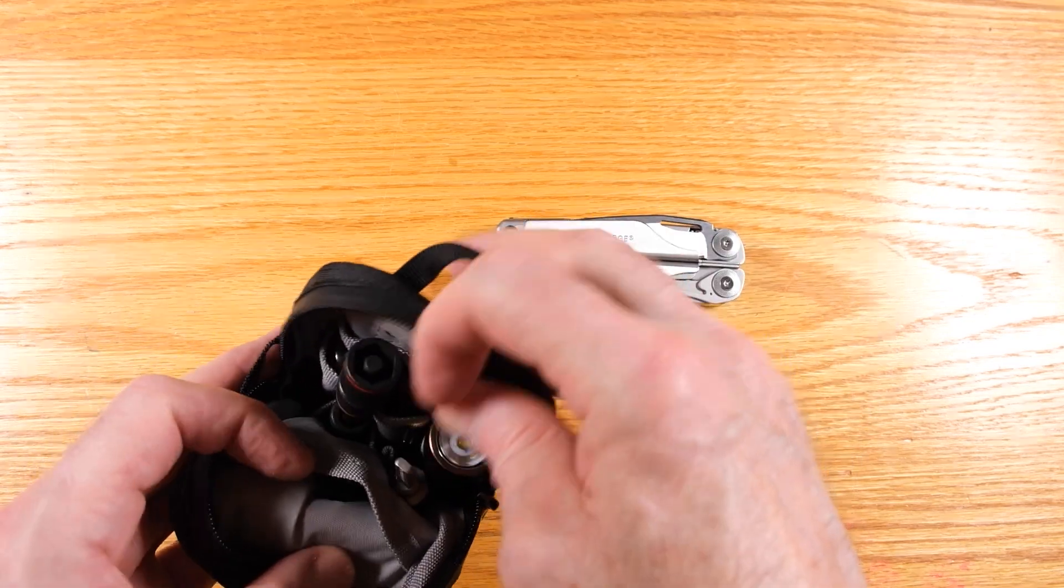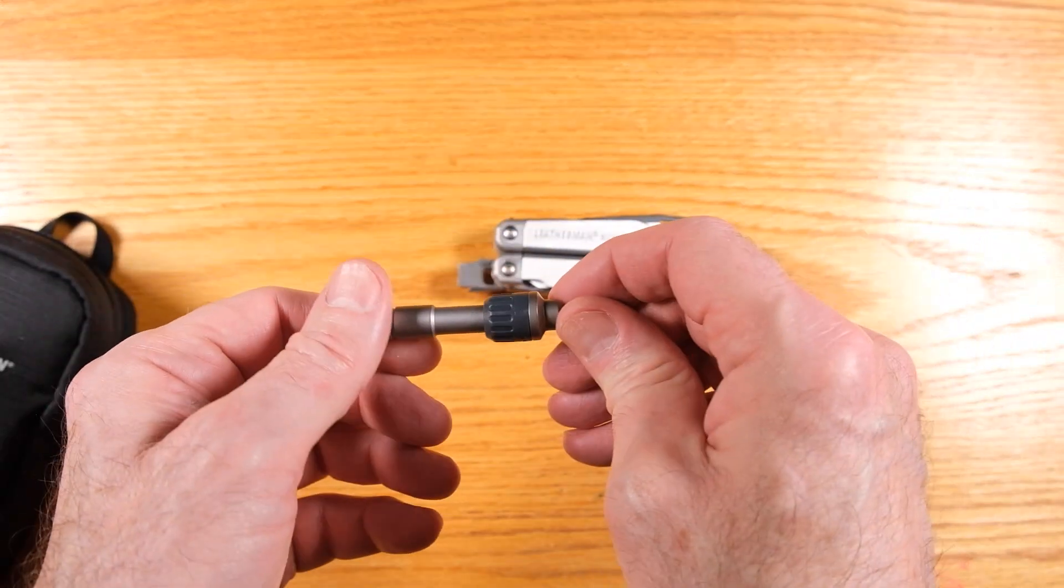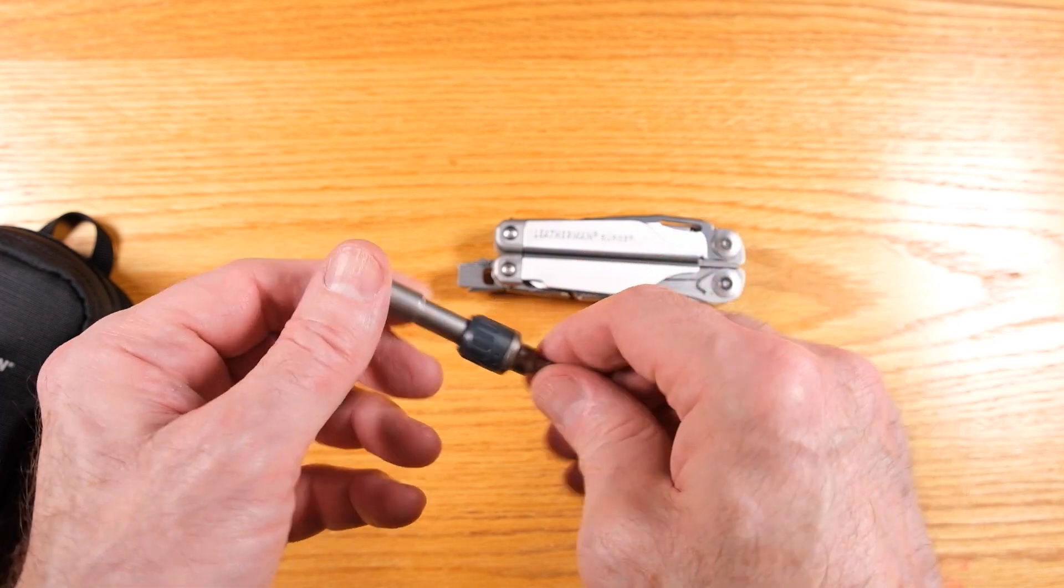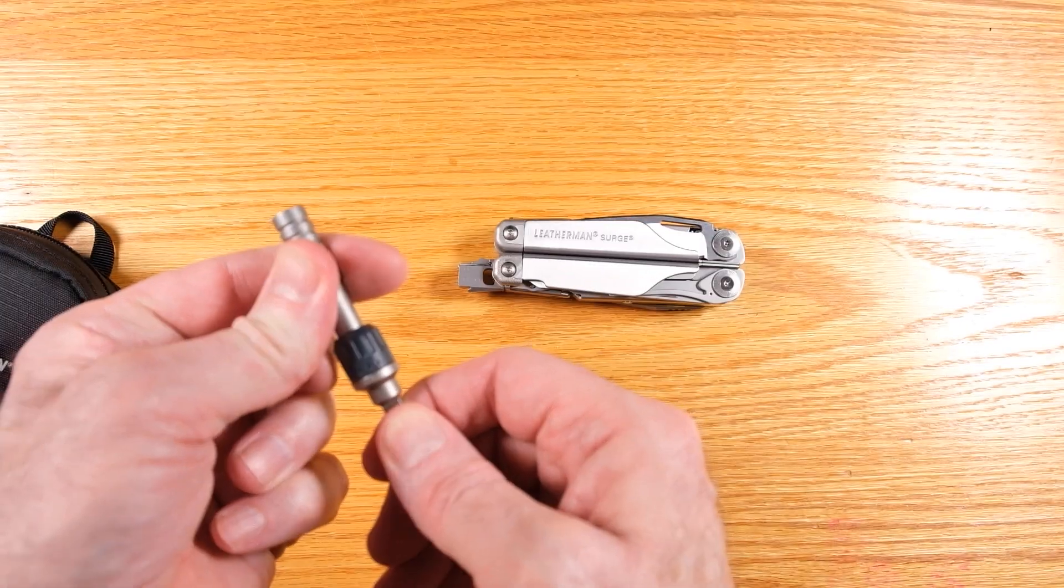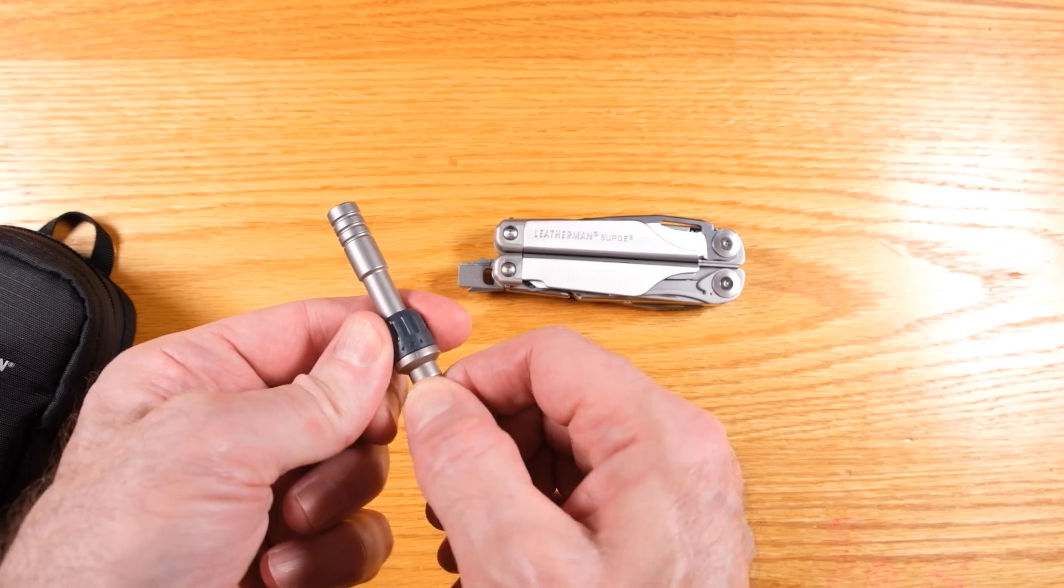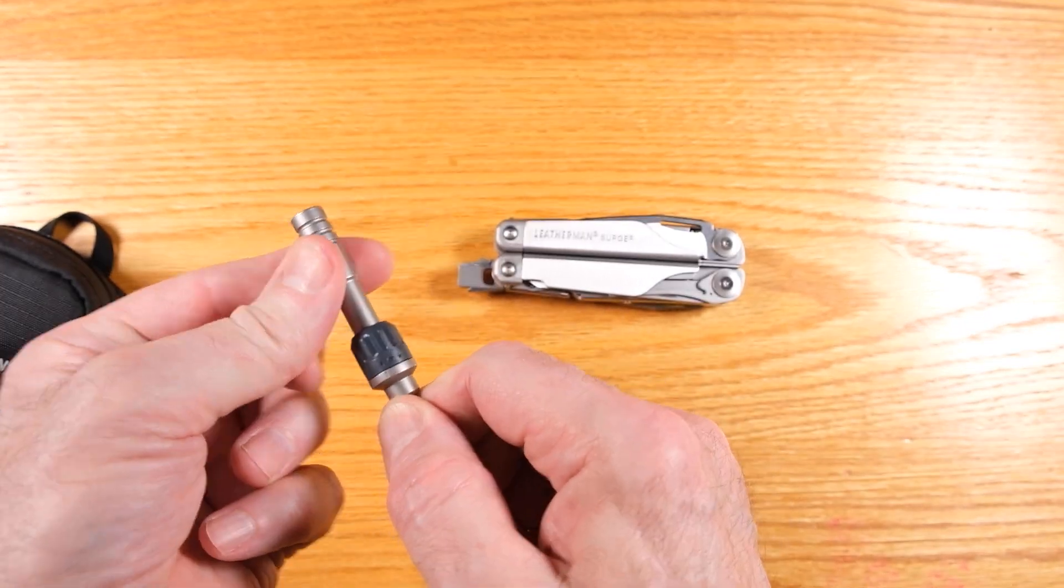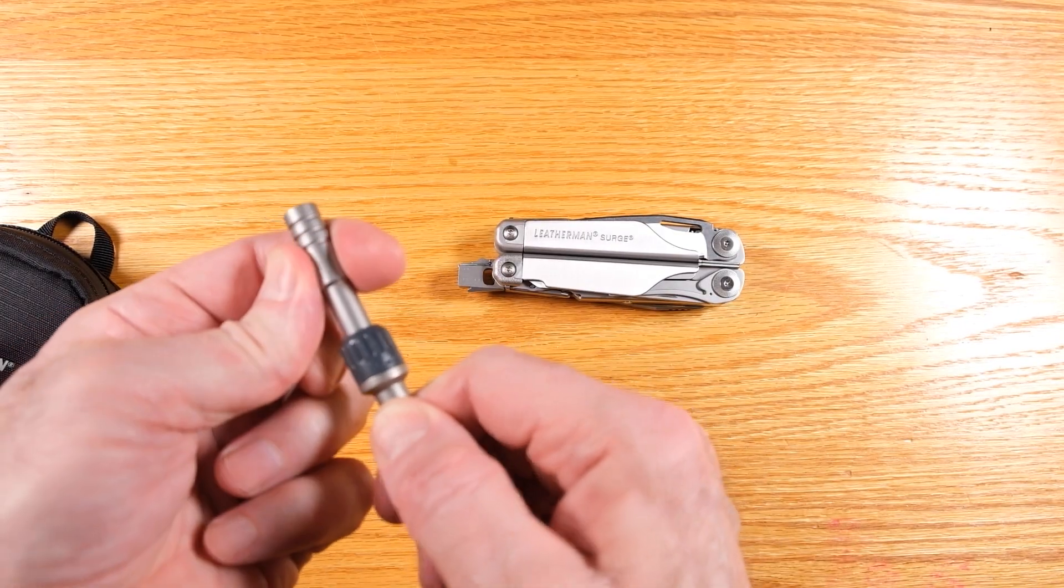And we're going to go back into the bag and we're going to pull out this, which is a bit extension that Leatherman makes. And this one is ratcheting. Now I have it locked right now. You turn this piece here and it now ratchets in one direction, but not the other.